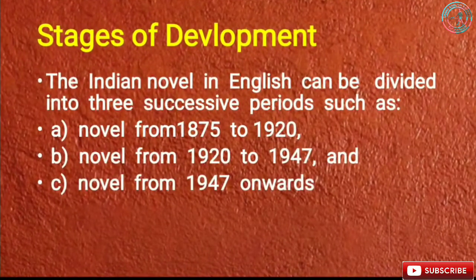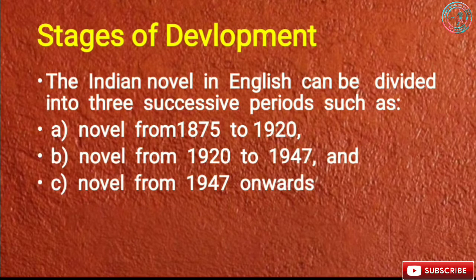Now we have the stages of development. The Indian novel in English can be divided into three successive periods: novel from 1875 to 1920, novel from 1920 to 1947, and novel from 1947 onwards — यह तीन stages हैं जिनमें Indian English novel का development हुआ।